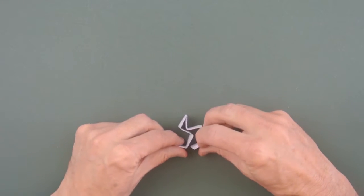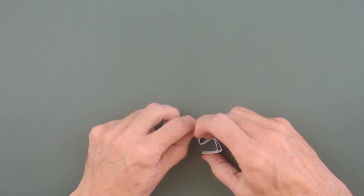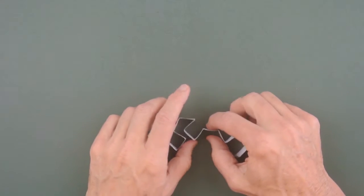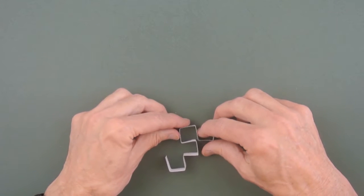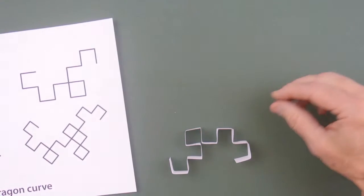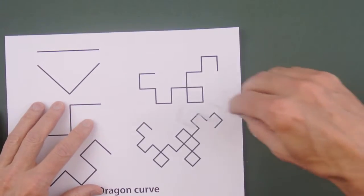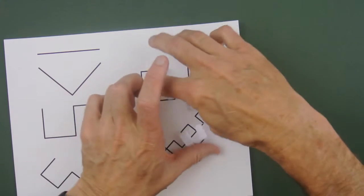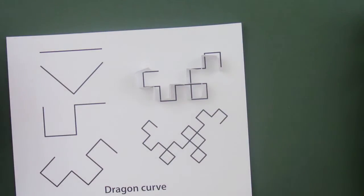And if we keep going, there's the third iteration. And finally we have the fourth iteration. If you want to check that, we can just lay it on top of this guy. See how you roll over.